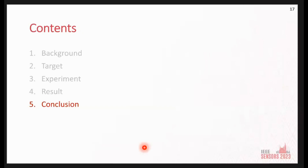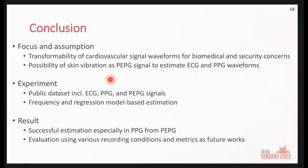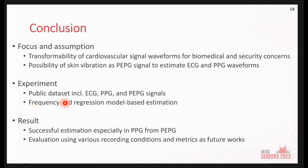I would like to conclude my presentation here. We focused on and assumed two items. The first is the transformability of cardiovascular signal waveforms for biomedical and security applications. The second is the possibility of skin vibration PEPG signals to estimate ECG and PPG waveforms. We conducted an experiment based on these two items using public datasets including ECG, PPG, and PEPG signals, and estimated the ECG and PPG waveforms using frequency and regression model-based methods. As a result, we succeeded in the estimation, especially for PPG waveforms from PEPG signals. In our future work, we will investigate this estimation using various recording conditions and evaluation metrics. Thank you for listening.